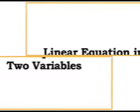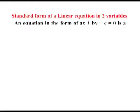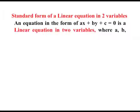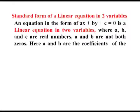Dear learners, now we shall discuss about linear equation in two variables. An equation in the form of Ax plus By plus C equal to 0 is a linear equation in two variables where A, B and C are real numbers.